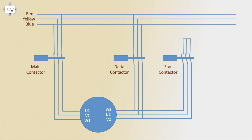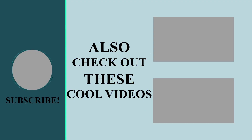In the delta connection, the star connection of the motor fully rotates. The delta connection brings the full 3-phase line into the motor via the PLC conductors, and then the motor turns off.